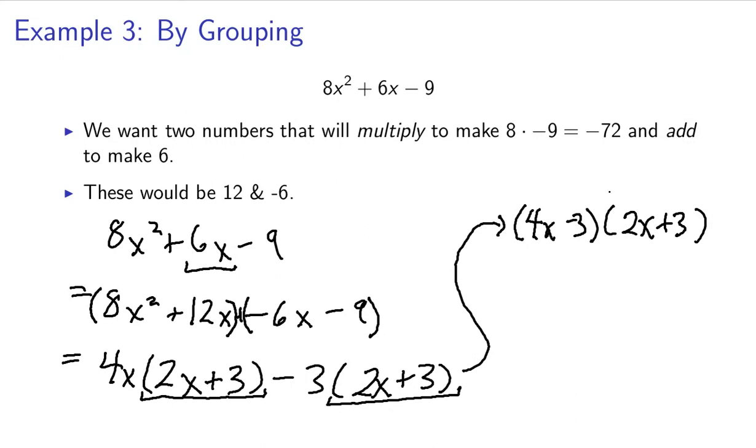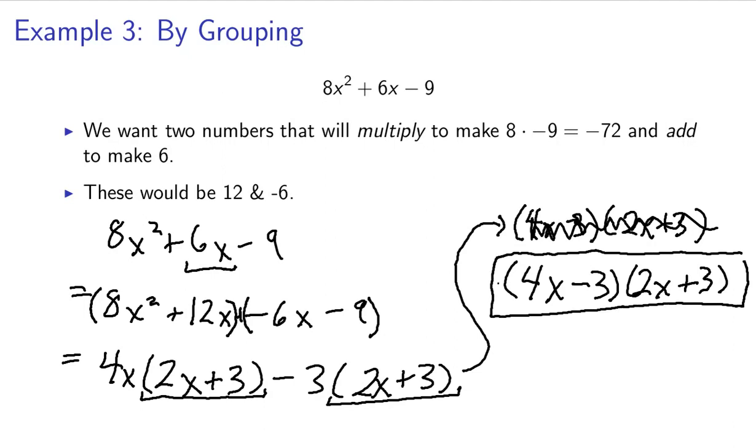So, I can say this is 4x minus 3 times 2x plus 3. So, this is the final factored form, because this was a common factor in each one of these.